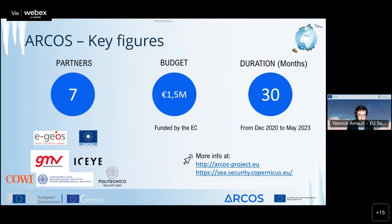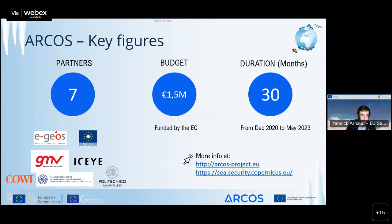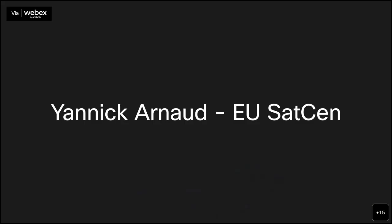Just to give some numbers: the ARCOS project is funded under the Horizon 2020 program with a budget of one and a half million euros funded by the European Commission. It is being done by seven partners - EGEOS, CNR, GMV, the Finnish Meteorological Institute, ISAI, Politecnico di Milano, and SatCen. We started in December 2020 and plan to complete by June 2023. For more information there are links to the project page and the Copernicus Security Service.